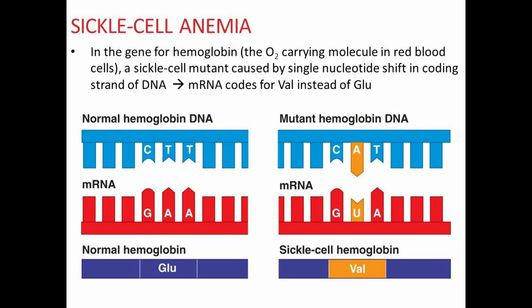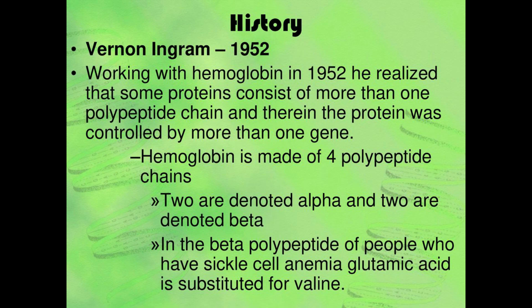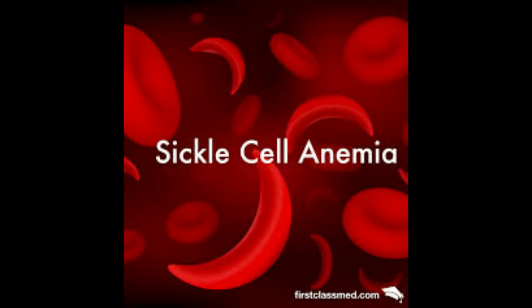Normal hemoglobin beta chain amino acid sequence at the relevant positions: valine, histidine, leucine, threonine, proline, glutamic acid, glutamic acid.